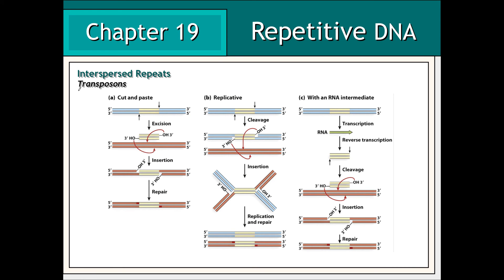Some of the repetitive sequences throughout the eukaryotic genome are known as transposons or transposable elements. Transposons are DNA entities capable of replicating and inserting themselves throughout the genome. Some transposons are removed from the DNA molecule and then inserted into another molecule, thus jumping from one locus in the genome to another.